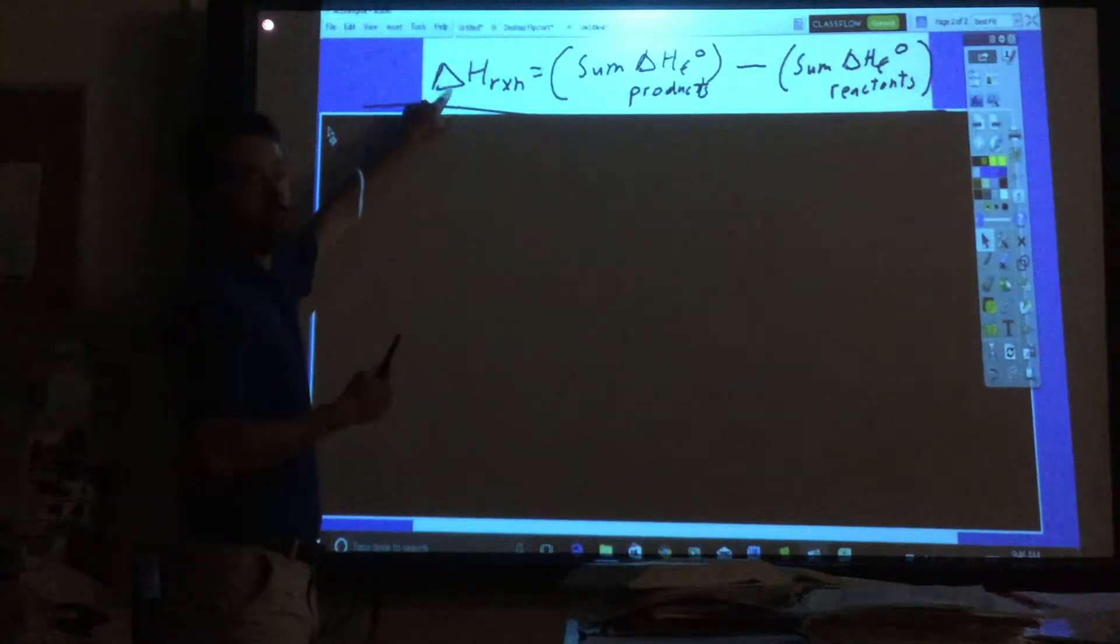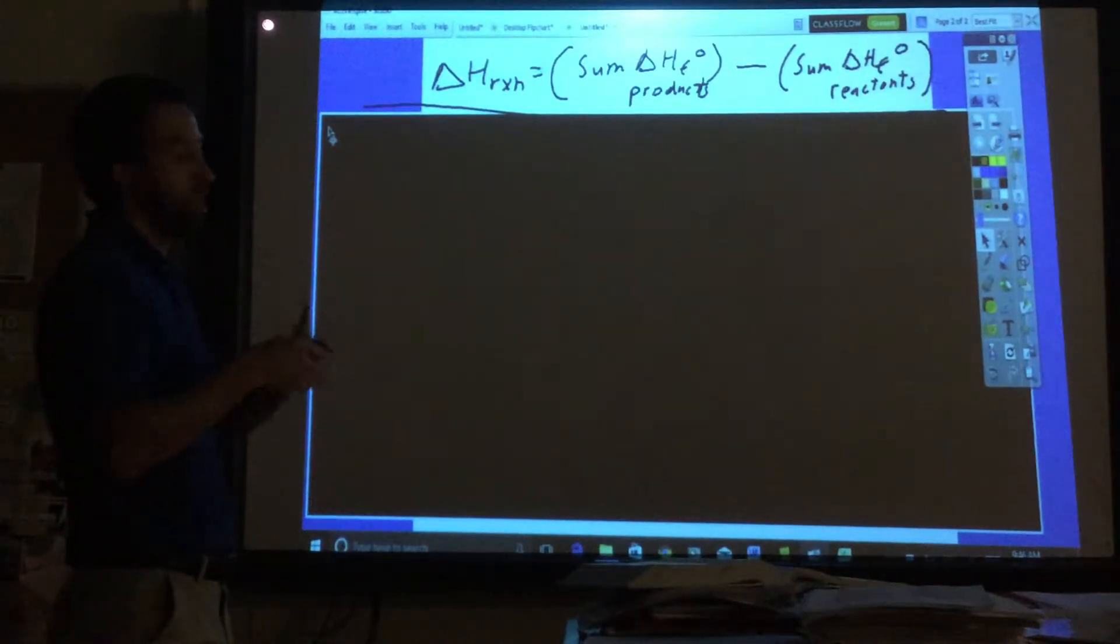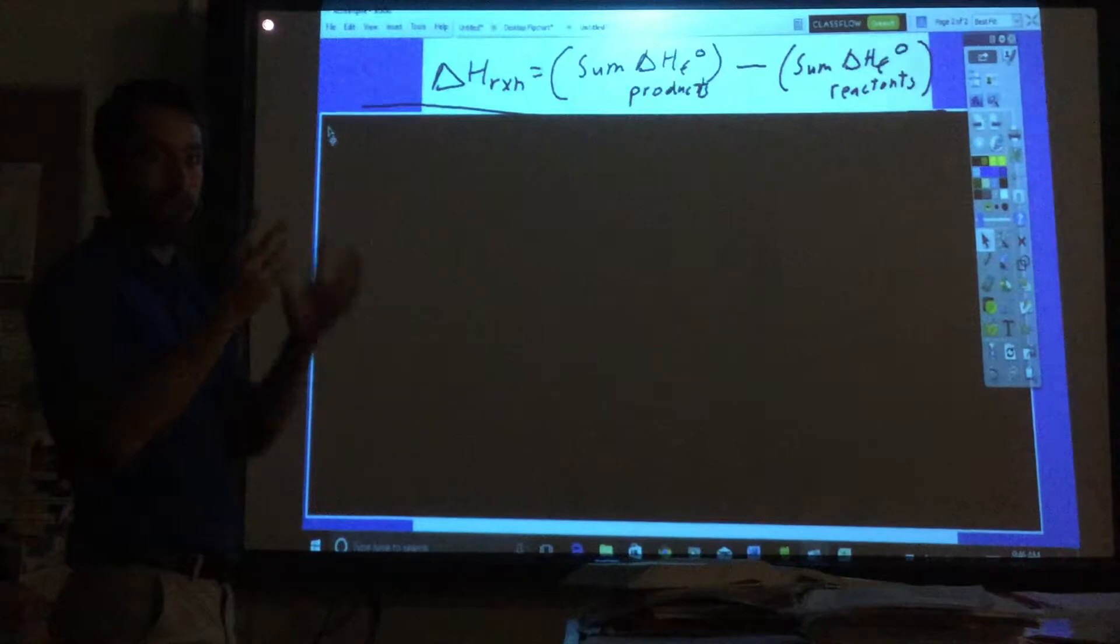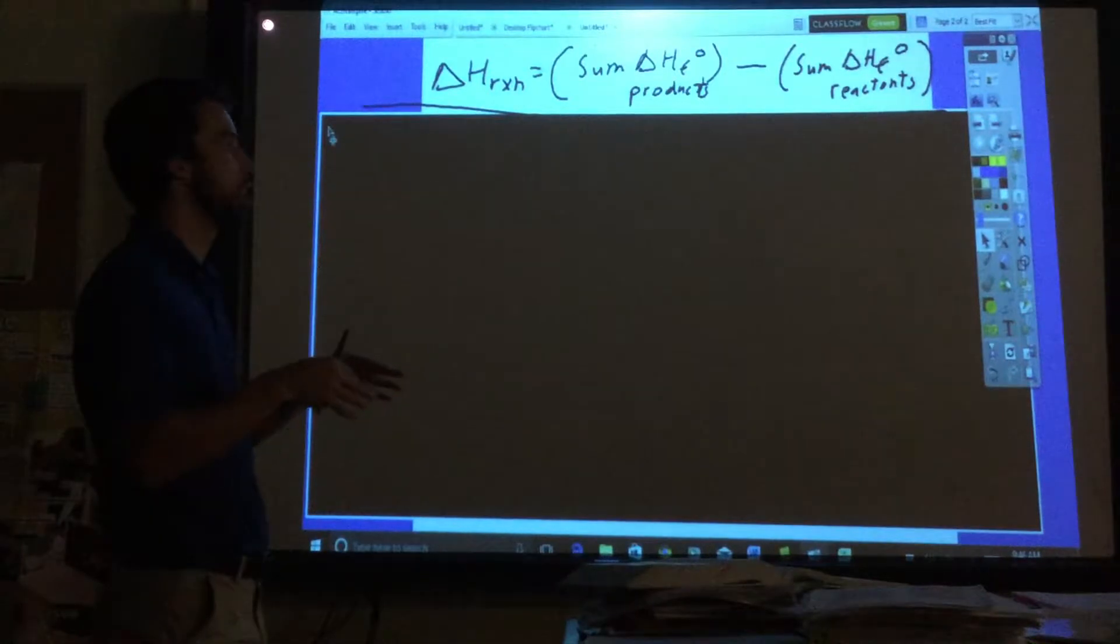It's just another way that we can find Delta H for reactions. We've been doing Hess's law where we're flipping and multiplying, dividing, adding equations. So this is just another method to find Delta H for a reaction.